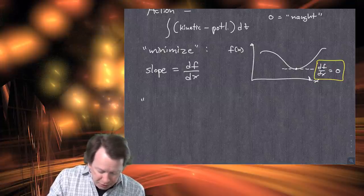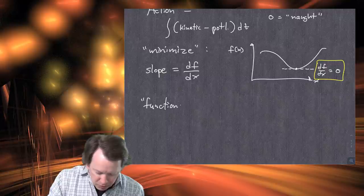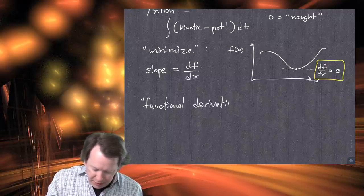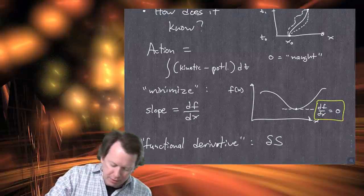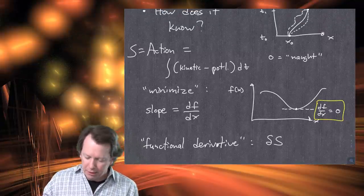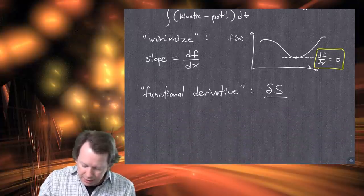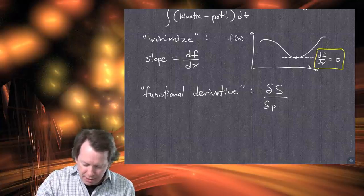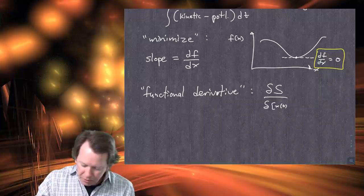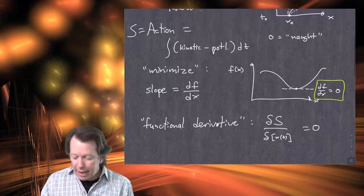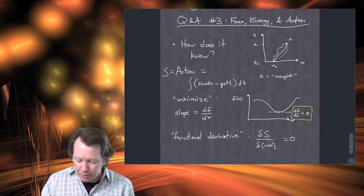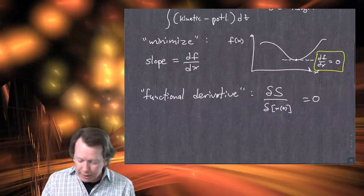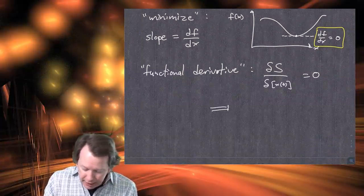The functional derivative of the action — written delta S (S is the action) over delta x(t) — is a fancy language for saying we differentiate with respect to all possible paths and set that equal to zero. And the point is we get an equation, and that equation turns exactly into Newton's laws. That's how you prove the equivalence between the least action way of doing classical mechanics and the Newtonian way.